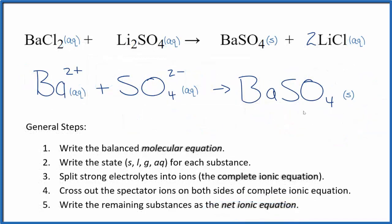So this is the balanced net ionic equation. Note that charge is conserved. We have a 2 plus and a 2 minus. That adds up to zero. Net charge is zero. And this is a neutral compound in the products. Net charge is zero. So charge is conserved. And if you count the atoms up, they're balanced too.